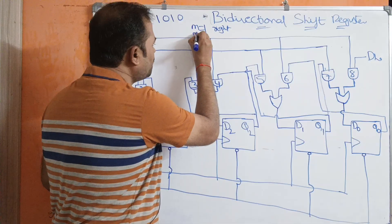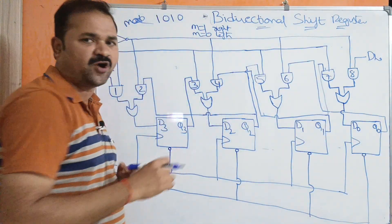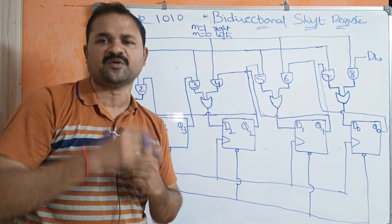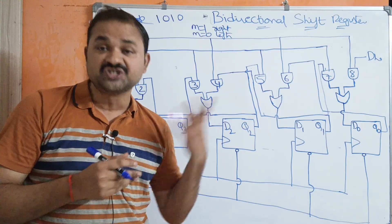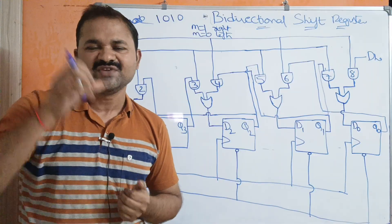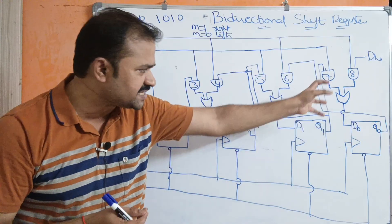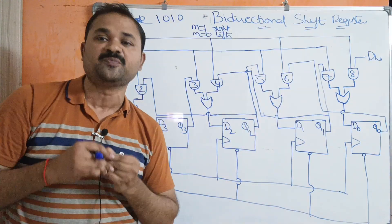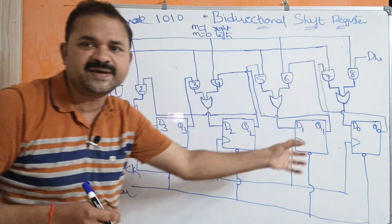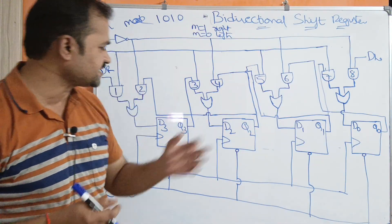If mode control bit is 0, then the circuit will perform shift left operation. So till now we have seen shift right operation only in every shift register like SISO, SIPO, PIPO, and PISO. But in this circuit we will discuss about shift left operation also. Shift left means the contents of the register will be shifted one position to the left. So let us see the circuit now.